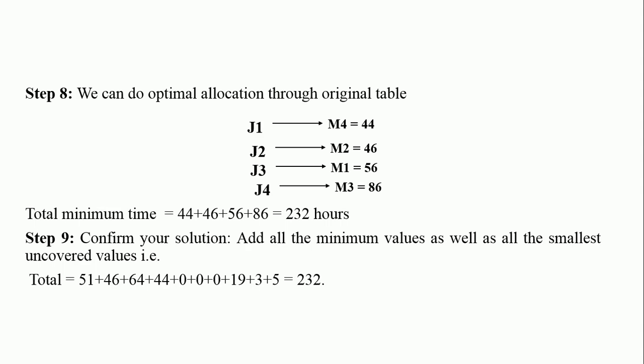Please try it and drop your feedback in the comment section. Another technique to confirm this result, which is always interesting: add all the minimum values and all the smallest uncovered values together — it will give you the total minimum time. Checking through all the tables, the minimum values are 51, 46, 64, 44, 0, 0, 0, 19, and the two smallest uncovered values used were 3 and 5. The addition of everything gives 232 hours. This is a very interesting way of checking your results when dealing with a minimization problem using the Hungarian method.